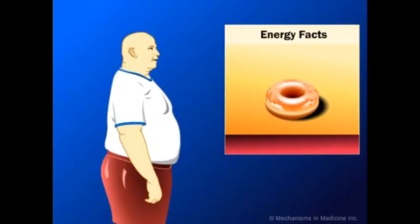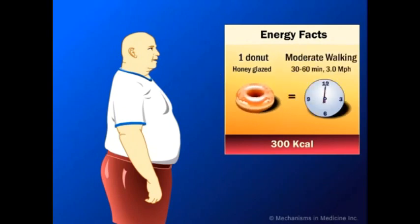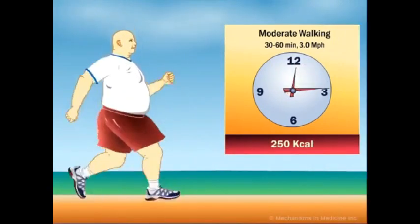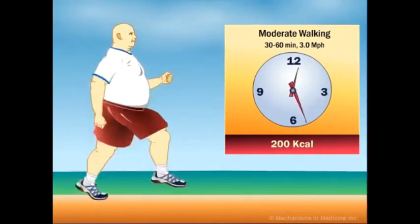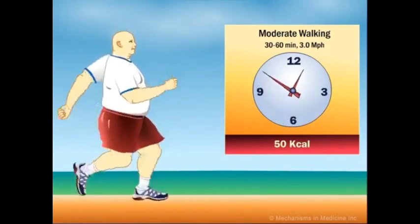Let us examine energy consumption. One honey-glazed doughnut is shown which has approximately 300 kcal. The energy intake from the consumed doughnut is equal to the energy consumed by moderate walking for 30 to 60 minutes at 3 miles per hour. If an individual walks for an hour at 3 miles per hour, they will expend approximately 300 kcal, the same as what was contained in the consumed doughnut.